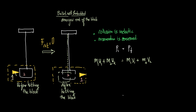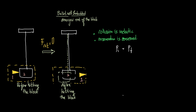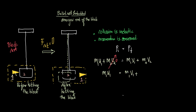Since the block is initially at rest, U2 = 0. So the momentum equation becomes: M1·U1 = M1·V1 + M2·V2. This is equation number one. We don't have all the parameters yet, so we proceed to the second part.